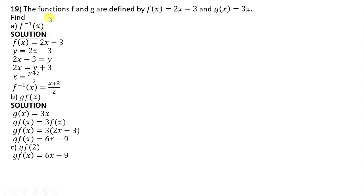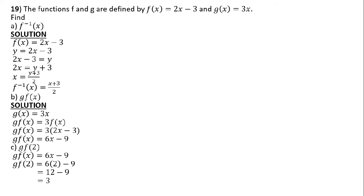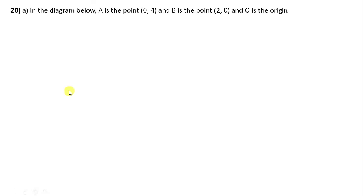Part c says find g(f(2)). Take the result g(f(x)) = 6x − 9 and replace x with 2. So 6 × 2 = 12, and 12 − 9 = 3. Therefore g(f(2)) = 3.